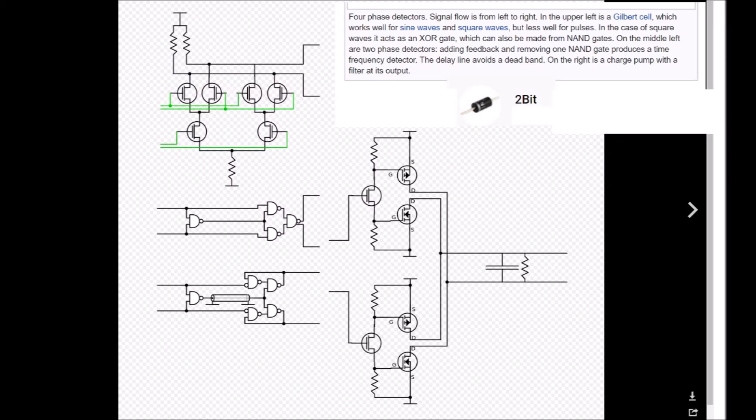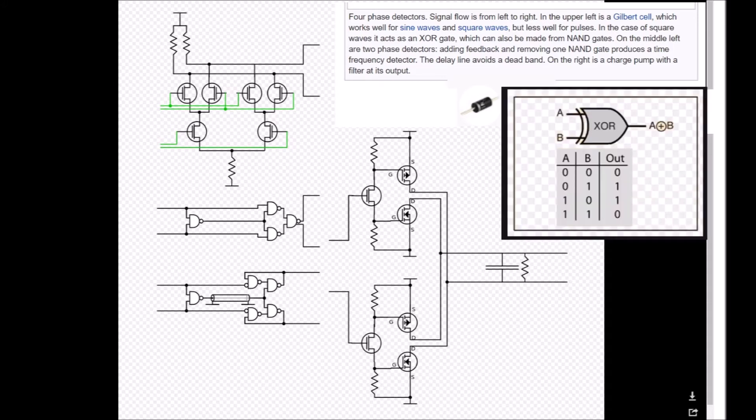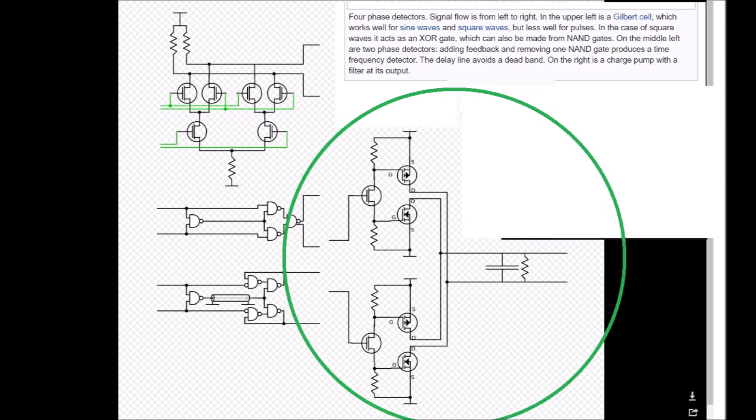And there is a picture here for which I will read the caption. For phase detectors, signal flow is from left to right. In the upper left is a Gilbert cell which works well for sine waves and square waves but less well for pulses. In the cases of square waves it acts as an XOR gate which can also be made from NAND gates. On the middle left are two phase detectors. Adding feedback and removing one NAND gate produces a time frequency detector. The delay line avoids a dead band. On the right is a charge pump with a filter at its output.